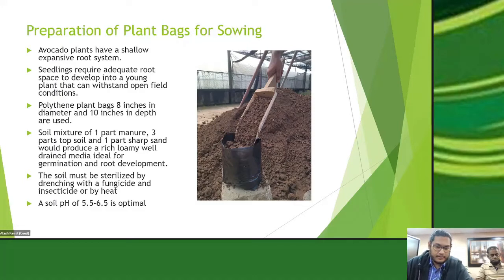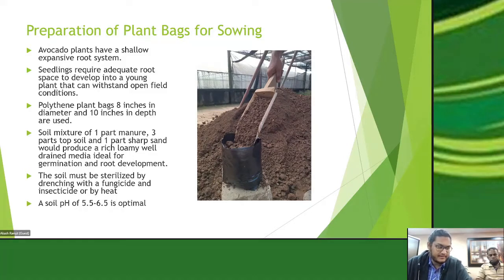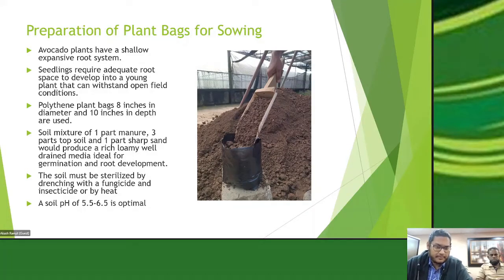Before planting the seed, the soil should be sterilized to control pathogens. You can do this by drenching the bags with fungicide and insecticide, or by covering them with plastic and allowing the heat from the sun to sterilize weed seeds and any pathogens present in the soil. Avocados like slightly acidic soil; a pH of 5.5 to 6.5 is adequate.